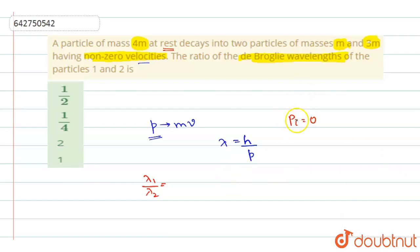And when you go with the final momentum, pf will be equal to the two masses you have, m and 3m. Those two combined together you should get it as 0, which means that the momentum of the first mass should be equal and opposite to the second mass, so that the total you will get as 0.